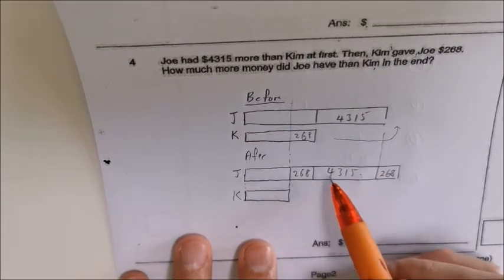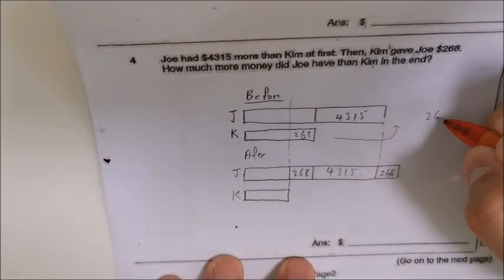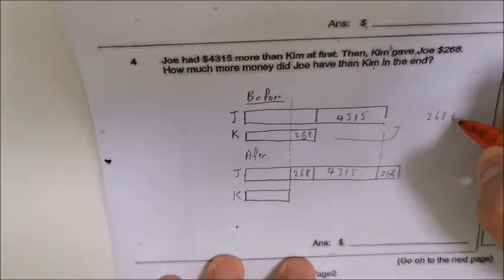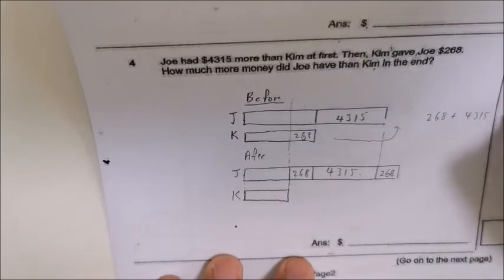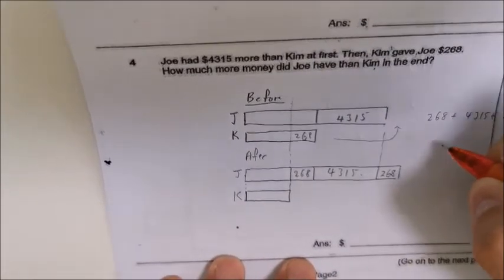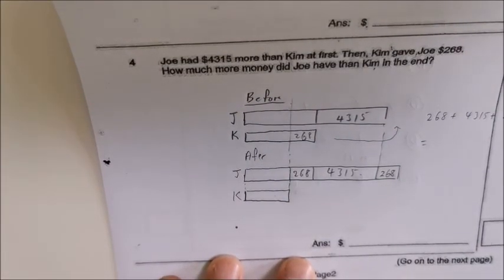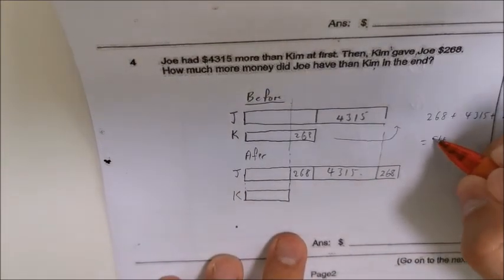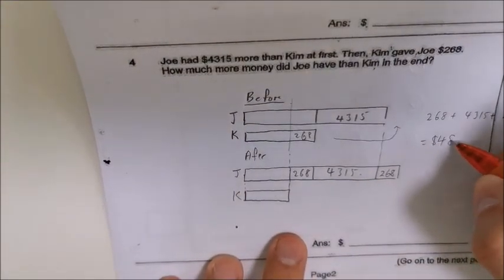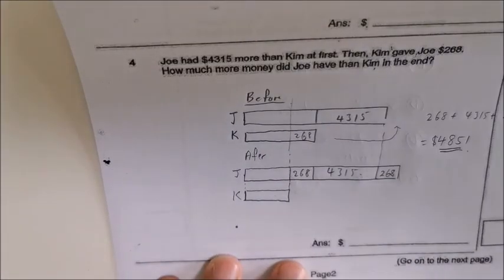So how much more money did Joe have than Kim at the end? You can see this is the difference — you just have to add up two hundred and sixty eight plus four thousand three hundred and fifteen plus two hundred and sixty eight. And that will be four thousand eight hundred and fifty one dollars.